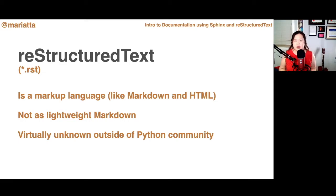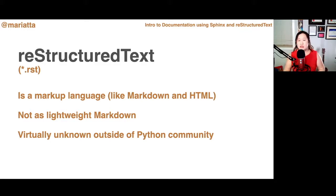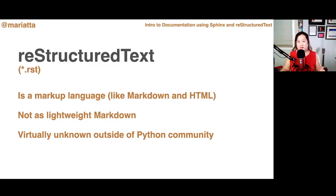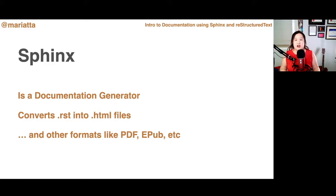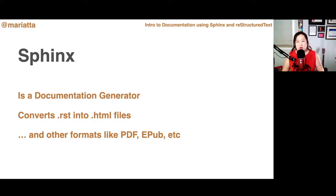I'll start with reStructuredText. reStructuredText is a markup language — you're probably familiar with others like Markdown or HTML. The file extension of reStructuredText is RST, and this is the file where we write the content of the documentation. reStructuredText is not as lightweight as Markdown; it's a little more complicated, and it's somewhat unknown outside the Python community. Sphinx is the documentation generator — the engine that converts all RST files into HTML files, which you then host for readers.